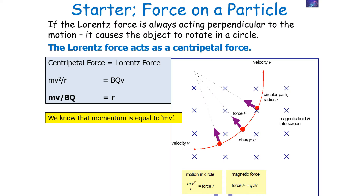If the Lorentz or magnetic force is always acting perpendicular to the motion, it causes an object to rotate in a circle. This is because the magnetic force, or the Lorentz force, is acting as a centripetal force. So the centripetal force is equal to this magnetic force, giving us mv² / r = Bqv. Cancelling the v terms on either side and rearranging, r — the radius of deflection — is equal to mv / Bq.